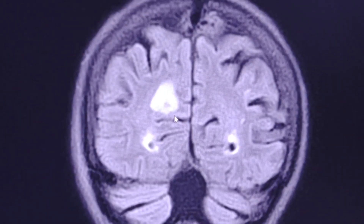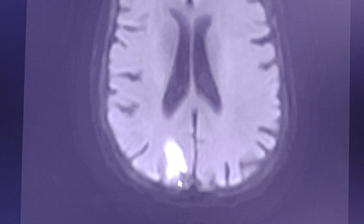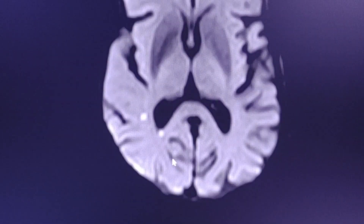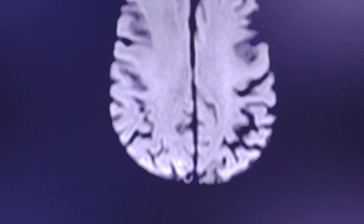In this case we are wondering if this is an infarct at an acute or chronic stage. So the next step is to check the diffusion imaging. As you can see, there is restricted diffusion in this region, which represents an acute infarct.